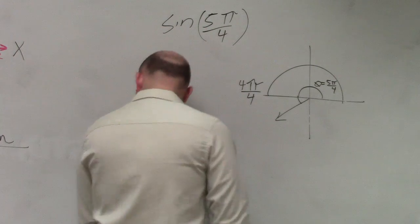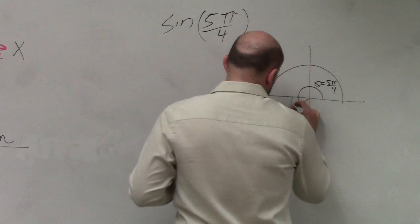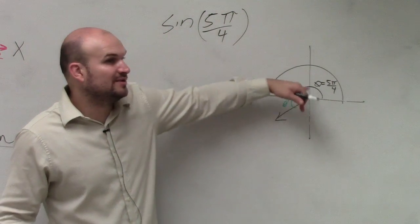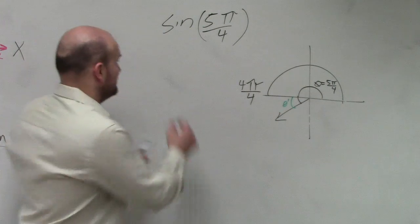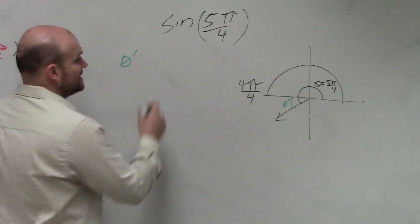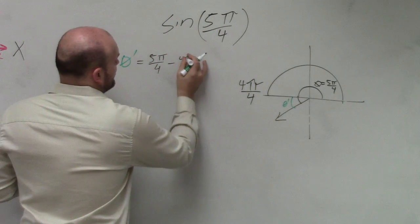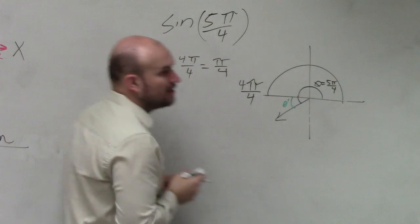So therefore, if I wanted to figure out what the reference angle is, if halfway around a circle is 4 pi over 4 and I went to 5 pi over 4, my reference angle is the difference between those two. So theta prime, I gave you guys these formulas, is equal to 5 pi over 4 minus 4 pi over 4, which is equal to pi over 4.